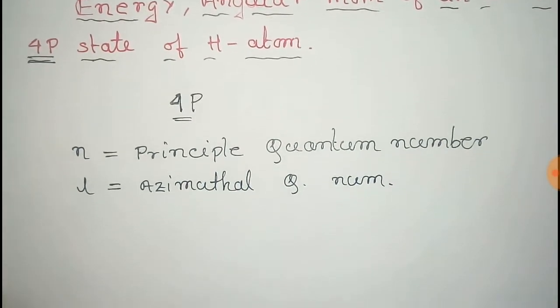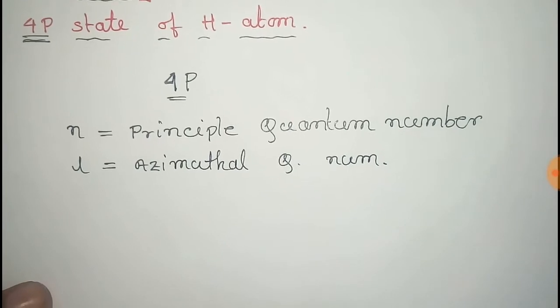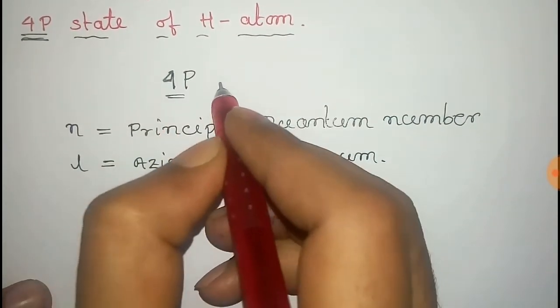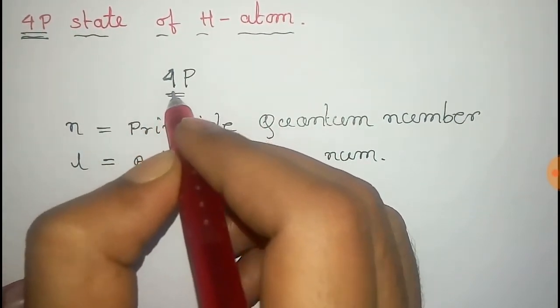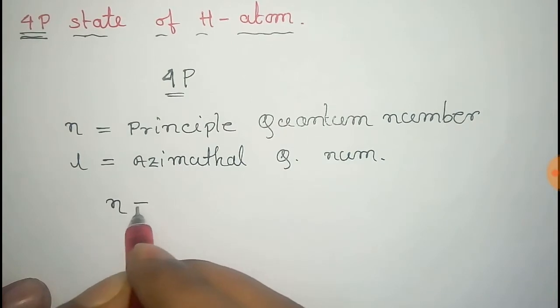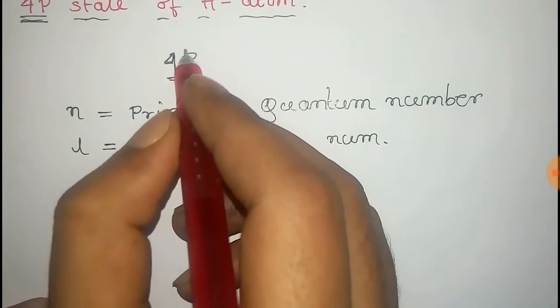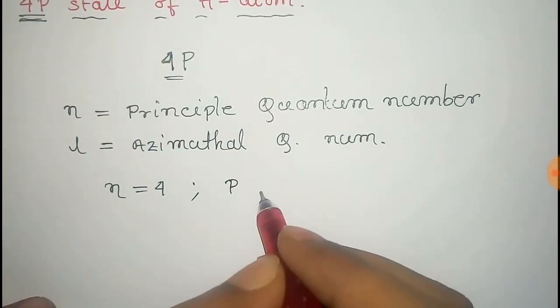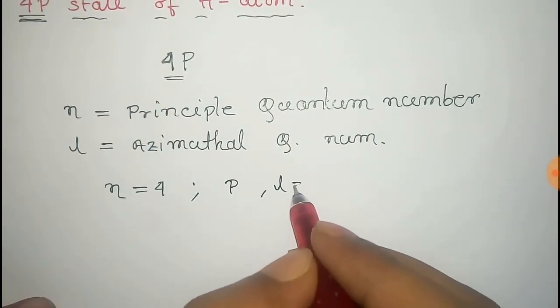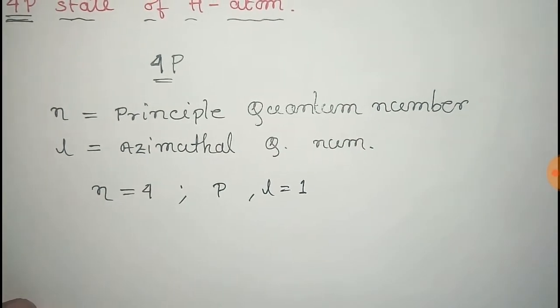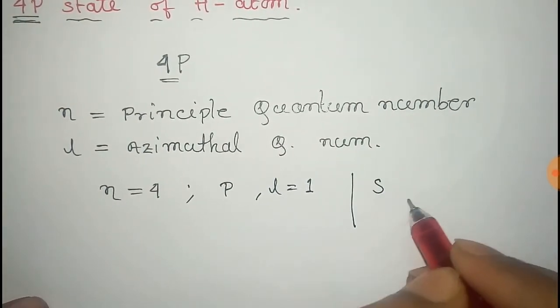Now for this 4p state, this 4 is the principal quantum number, so n equals 4. And for P, L equals 1, that is the azimuthal quantum number equal to 1.